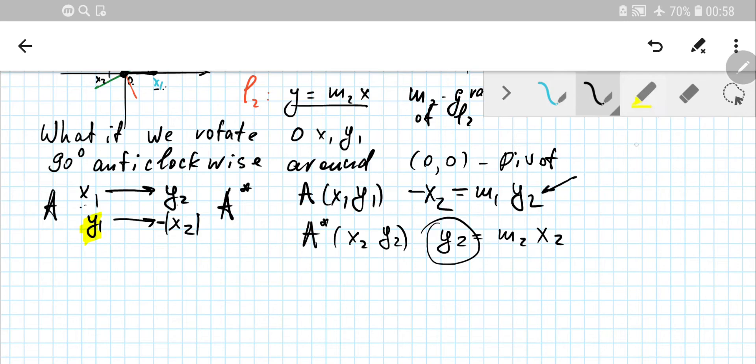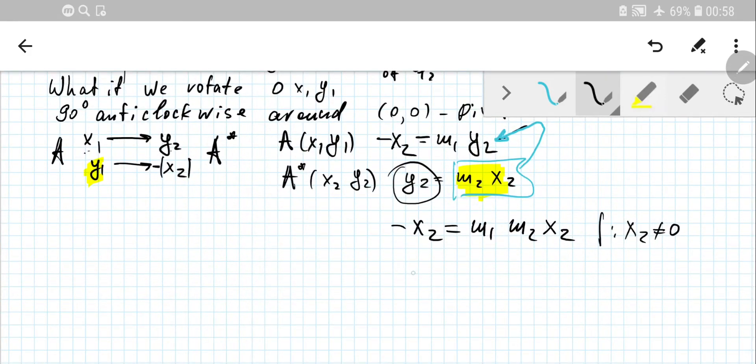Now, what we're going to do? We know that y2 is this. Using simultaneous equations, we can replace y2 into the right side. Negative x2 will be equal to m1 times m2 times x2. We can divide by x2, of course having that x2 not equal to 0, and we will get negative 1 equals m1 times m2. Or rearranging, m1 is negative 1 over m2. That we exactly need to prove.